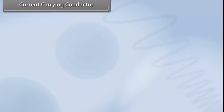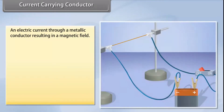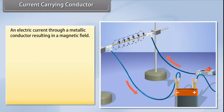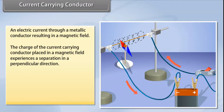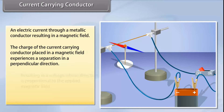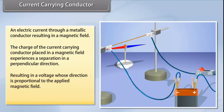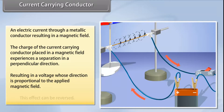An electric current passing through a metallic conductor results in a magnetic field being created around it. The charge of the current carrying conductor placed in a magnetic field experiences a separation in a direction that is perpendicular to the current and the magnetic field. This results in a voltage whose direction is proportional to the applied magnetic field. This effect can also be reversed.